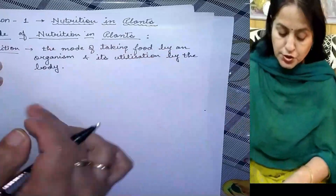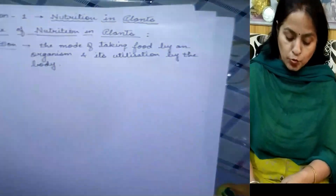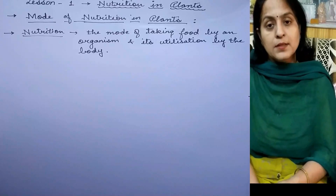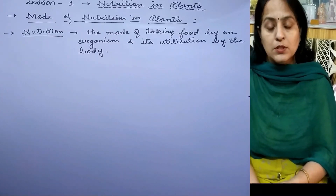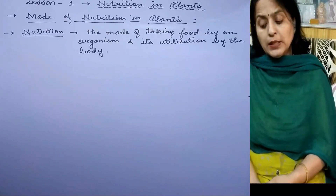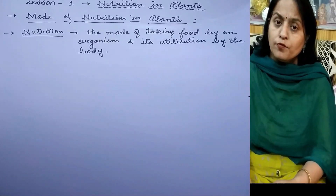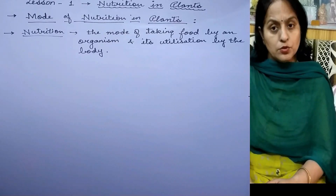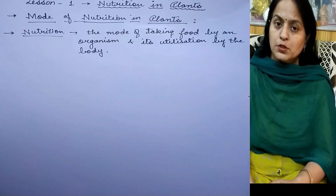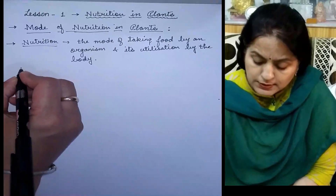All living organisms need food, whether they are plants or animals. Plants can make their own food, but animals including human beings cannot. The mode of nutrition in which organisms make food themselves is known as autotrophic nutrition — meaning all plants are autotrophs. Animals and other organisms which take in ready-made food prepared by plants, or depend on other animals for food, are known as heterotrophs.